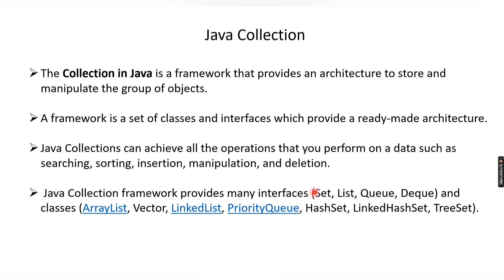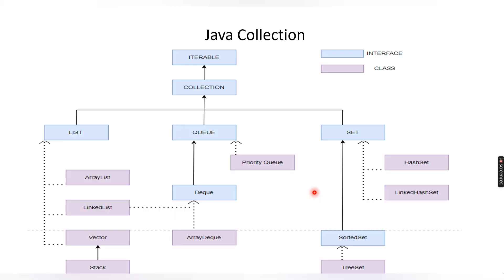Now let's look at how the Java collection architecture actually looks. This diagram can be referred to in order to understand Java collections. In the Java collections, Iterable is the root interface. The interface is represented by one particular color, and another color represents the classes.